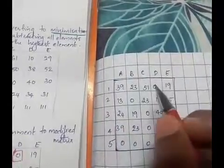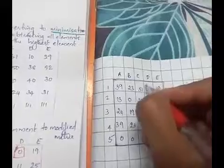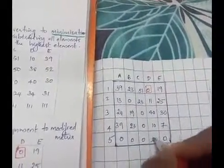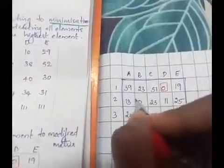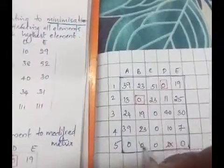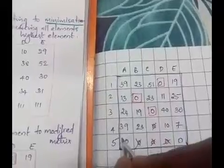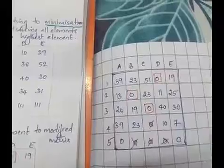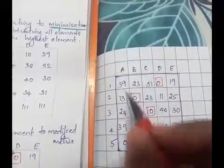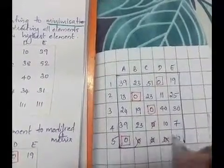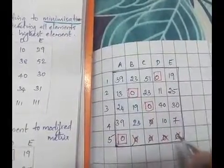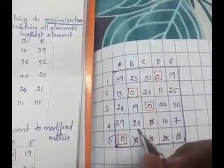Making assignments row-wise first, then column-wise. In the first row we have a single zero row, so an assignment is made and zeros in that column are struck. We continue similarly for other rows and columns. However, the assignment is not complete, so we proceed to tick marking.